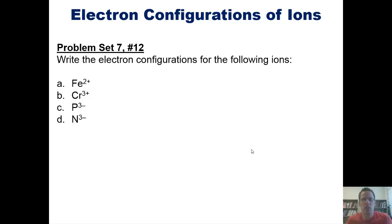That takes us to a problem. Write the electron configurations for the following ions: Fe2+, Cr3+, P3-, and N3-. I invite you, of course, to do these on your own. And if you like, I'll post a link here to a separate video in which I show you the answers on the board.